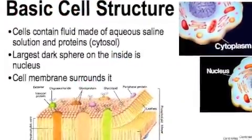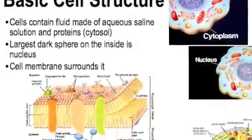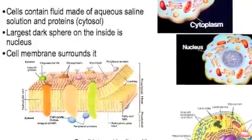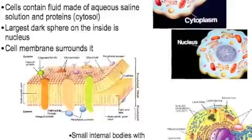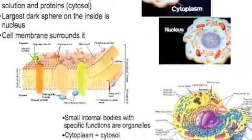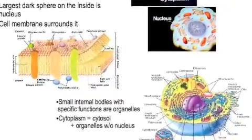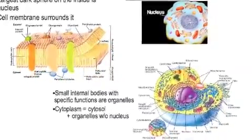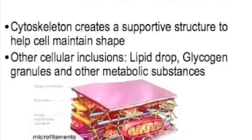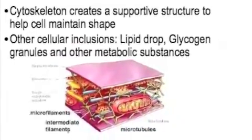Let's look at some basic cell structure. The cell's interior is mostly a watery liquid that is salty — look at the term there: aqueous saline solution, that's what that means. Include proteins in that and we call it the cytosol. The largest dark sphere on the inside is the nucleus, protecting the DNA. The cell membrane surrounds the whole thing. Then we have small internal bodies with specific functions — some will make energy, others protein, etc. They are called organelles. The cytoplasm is the cytosol plus organelles without the nucleus. A cytoskeleton creates a supportive structure to help maintain the cell's shape, kind of like our skeletal system. Then we have other cellular inclusions like lipid droplets or glycogen granules or other metabolic substances.